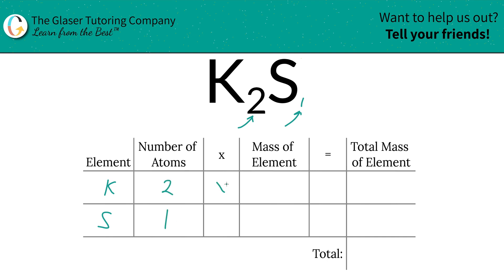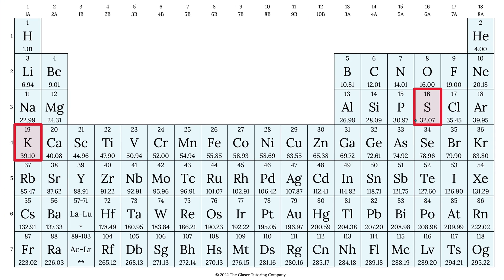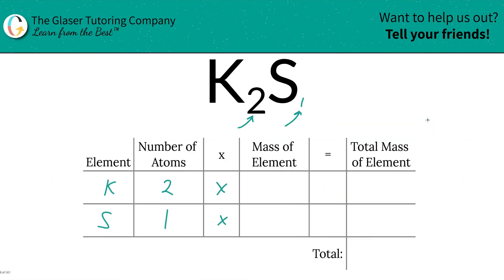Then we're going to multiply those number of atoms by the mass of each element, and those masses are found on the periodic table. So here's potassium, 39.1, and here's sulfur, 32.07. So let's write them in: 39.1 and then sulfur is going to be 32.07.